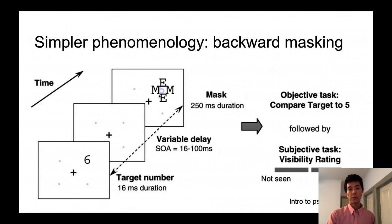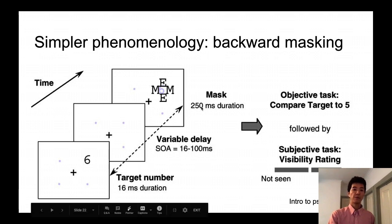this masking image is presented at the location surrounding the number six. And this is called sometimes the lateral masking or metacontrast masking. And this effectively removes the visibility of the target six when the timing between the variable delay is relatively close to the target.